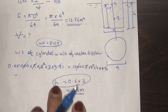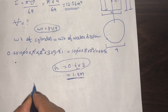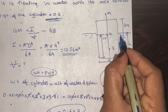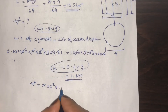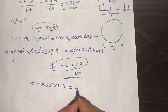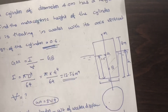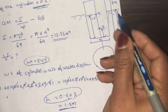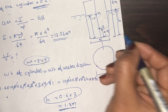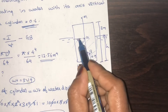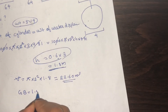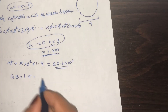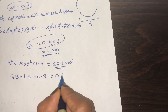So H is equal to 1.8 m. We will now compute the immersed volume: π r² h equals 22.60 m³. GB is equal to H divided by 2, that is 1.8 divided by 2 equals 0.9 m. The center of gravity OG is 1.5 m, so GB equals 1.5 minus 0.9 equals 0.6 m.